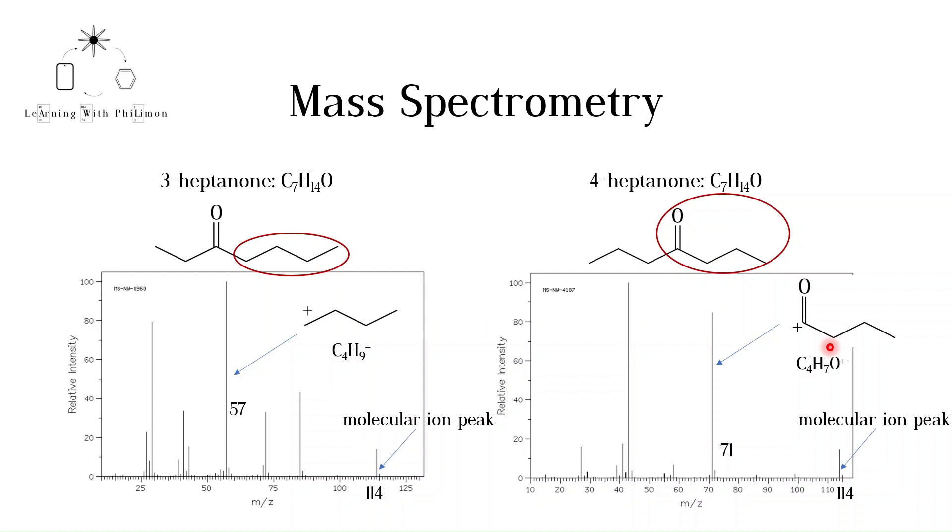Although you might not be able to identify every fragment-ion peak in a mass spectrum, it can help you identify sections of an unknown molecule. As you can see in this example, it can also help you distinguish between two very similar molecules.